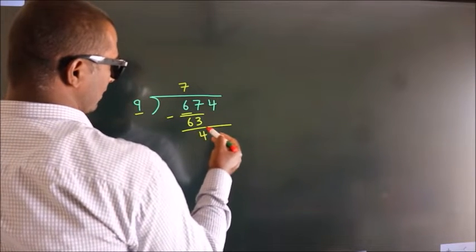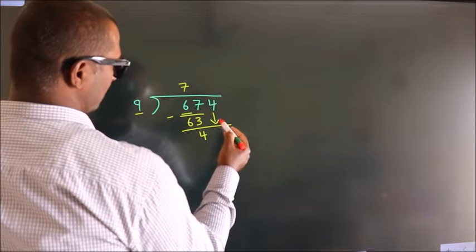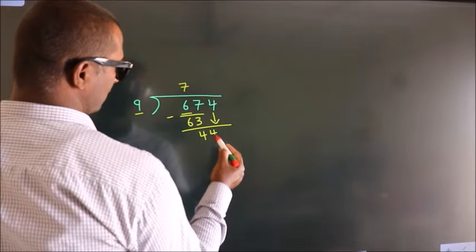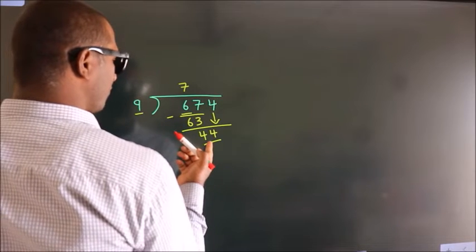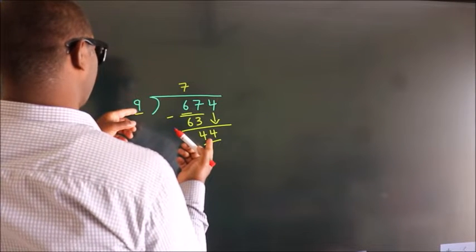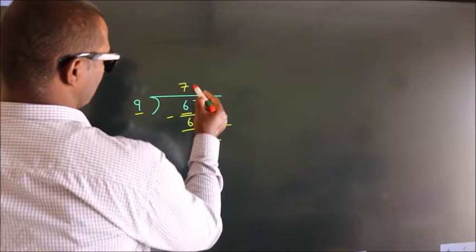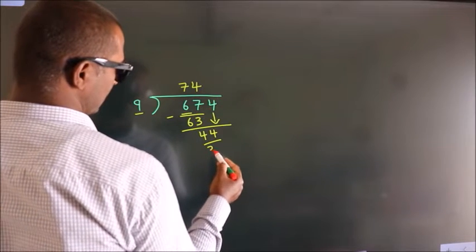After this, bring down the beside number. So 4 down, so 44. A number close to 44 in 9 table is 9 4s, 36.